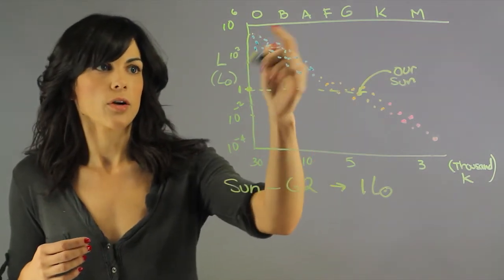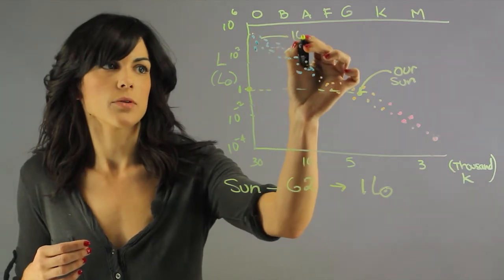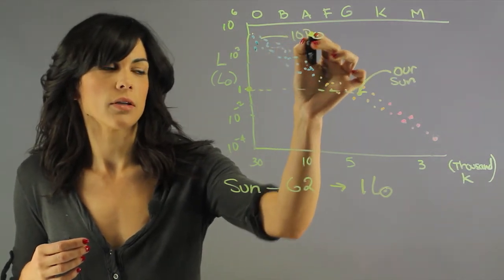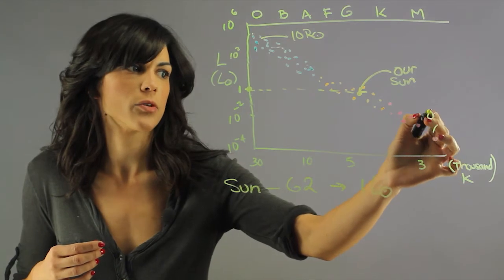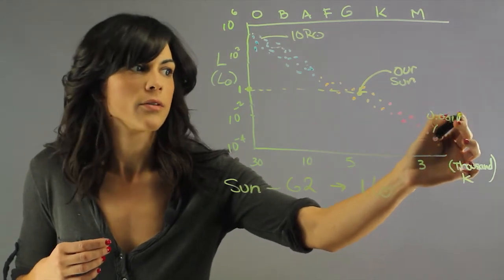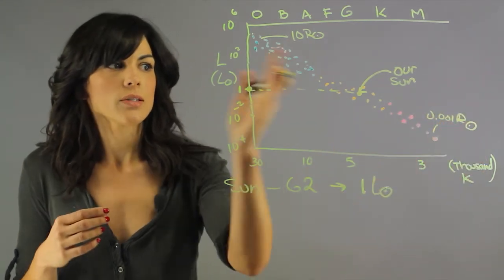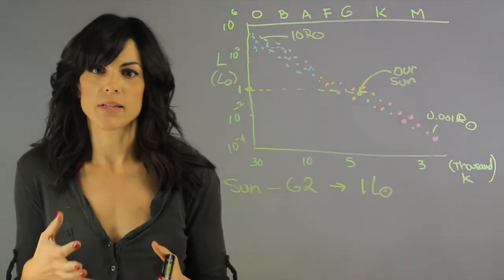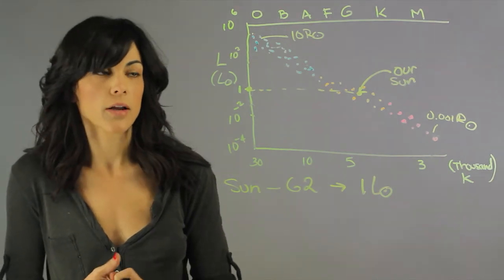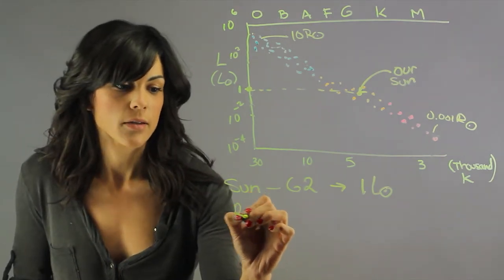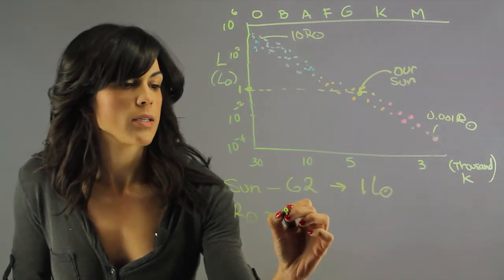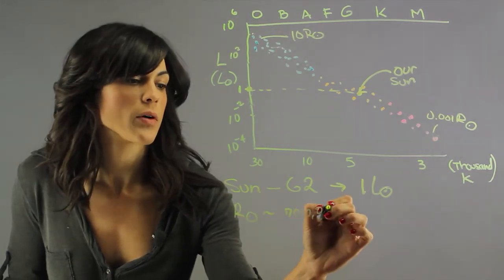Over here we have about ten times the radius of our Sun and over here we have about 0.001 the radius of our Sun. As you can tell our star is a mid-size star, an average star. The radius of the Sun is 700,000 kilometers.